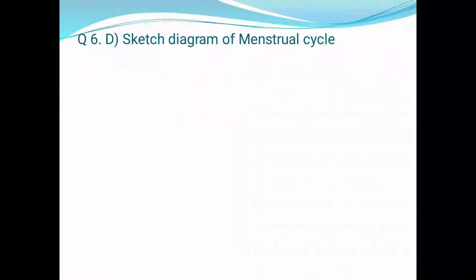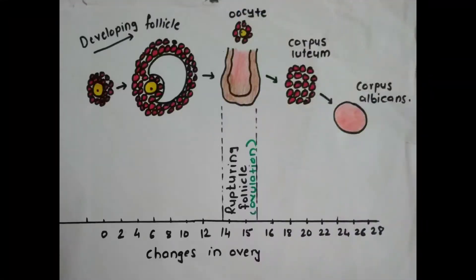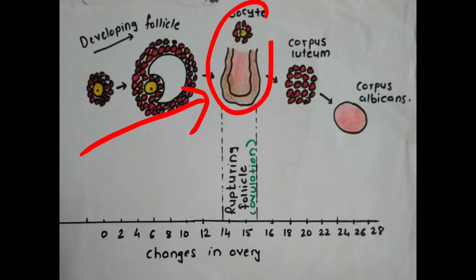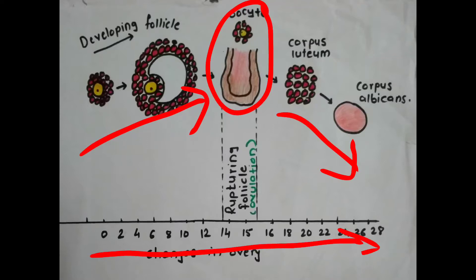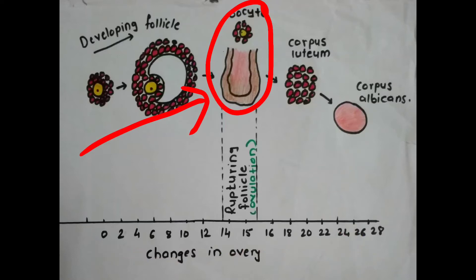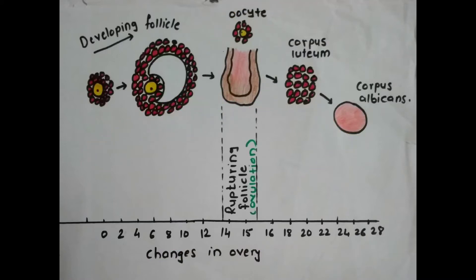There is one more question in your exercise: sketch the diagram of the menstrual cycle. The diagram in the textbook is very complex to draw, so here is a simpler version you can draw in the exam. This diagram shows the developing follicle, the rupturing during ovulation, and the synthesis of corpus albicans — along with the day-wise changes in the ovary during the menstrual cycle. Hope you understood the entire process completely. Study properly and stay tuned for the answers to the next questions. Thank you, students — bye!